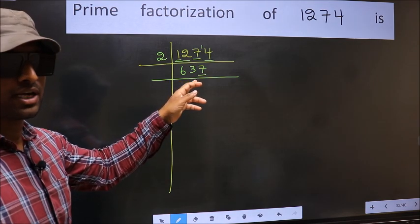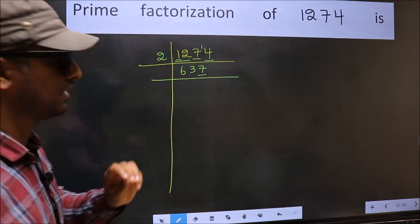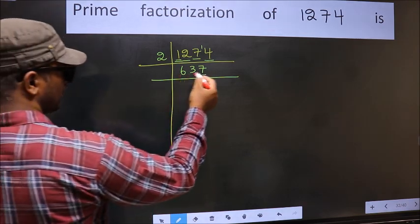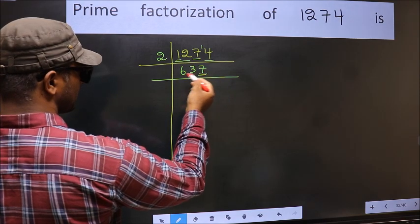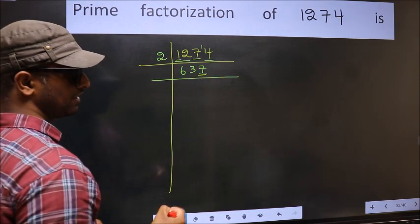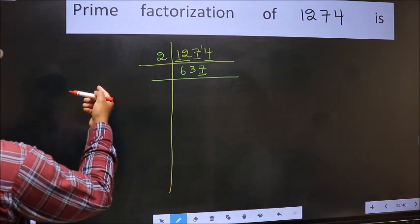Next prime number 5. Over here the last digit is neither 0 nor 5, so this is not divisible by 5. Next prime number 7. Let us check divisibility by 7 here.